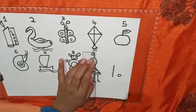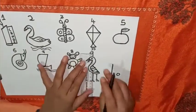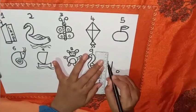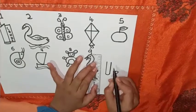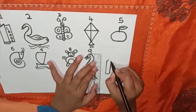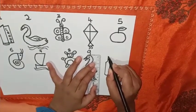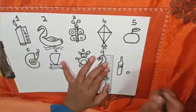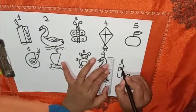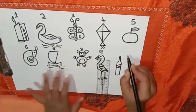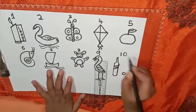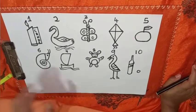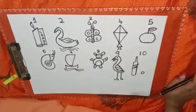Friends, this is number ten. Friends, now we have to draw one more one in front of ten. Friends, this is a bat and ball from number ten. Friends, you can see we have drawn these pictures from